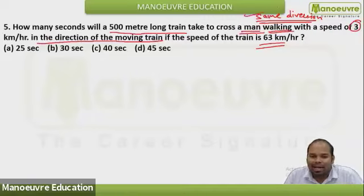So that I have already told you. When two objects are moving in the same direction, the relative speed will be what? Formula is the same, okay? Speed is equal to distance upon time.